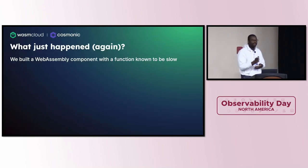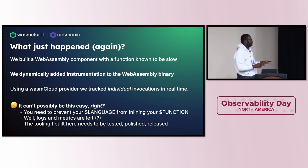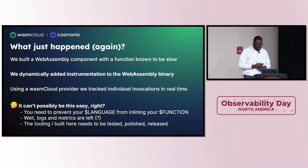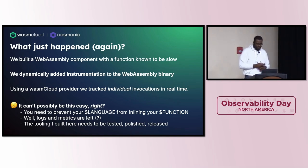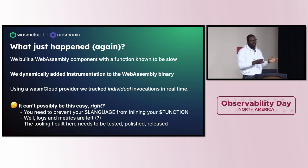Just to wrap up: we built a WebAssembly component, added instrumentation automatically to the produced binary — not in our code, without changing the original code — and used a WasmCloud provider to catch individual invocations. Obviously it can't all be that easy — there are a few caveats. One, you need to make sure your language doesn't inline your function; if you want to trace a function and it gets inlined, there's nothing to trace. And of course, along with traces, we need logs and metrics to really be fully observable. The tooling I built here obviously needs to be tested, polished, and released. This stuff is early, but this is basically what people hope for when they want toil-free observability.